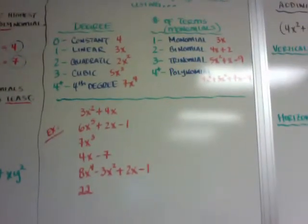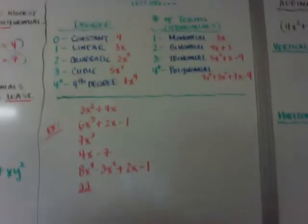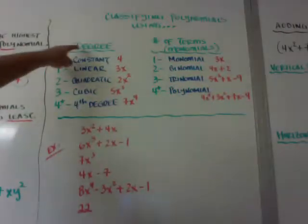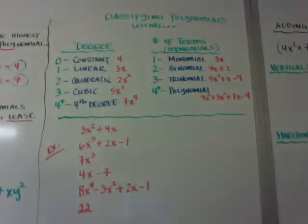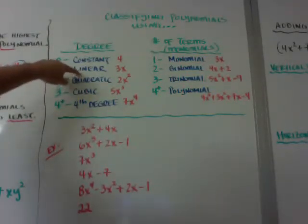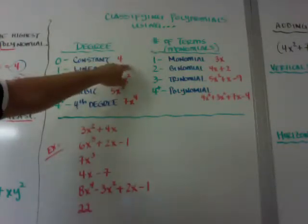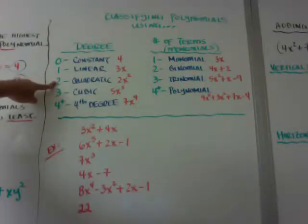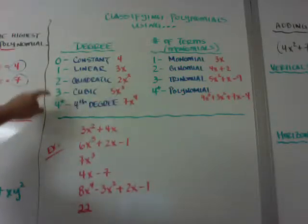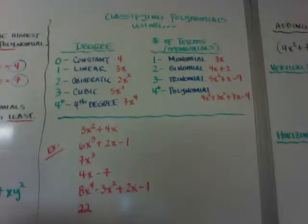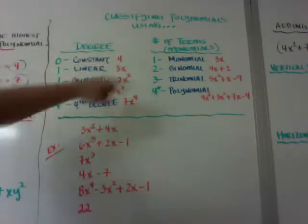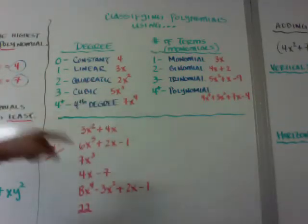Now classifying polynomials — we're going to use the degree and the number of terms. A zero degree is called a constant, like the number four. A degree of one is linear, just like our linear equations y = mx + b or y = 3x. A degree of two is called quadratic — it's actually degree two. If the degree is three, it's cubic, like 5x cubed. And then four and above is just fourth degree, fifth degree, sixth degree, et cetera.